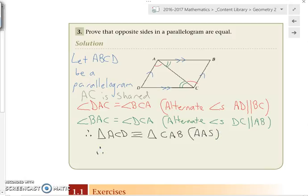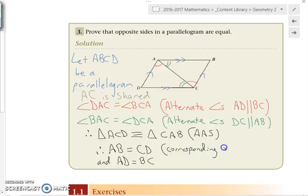Therefore, what's the question asking us to tell? AB equals CD and AD equals BC. Now why? Why? Corresponding sides in congruent triangles. We all happy with that?